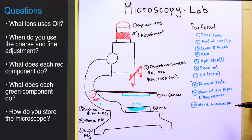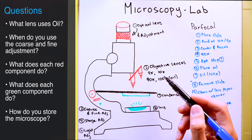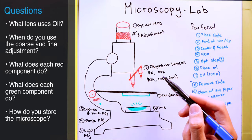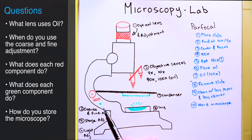And the proper way to store your microscope is going to be lowering the stage all the way, bringing the objective lens to the lowest magnification, which is the 4x. If you have a light switch here, bring the knob all the way down and then turn it off.